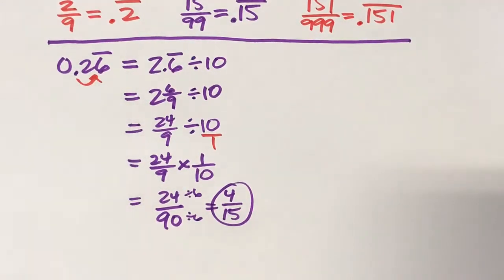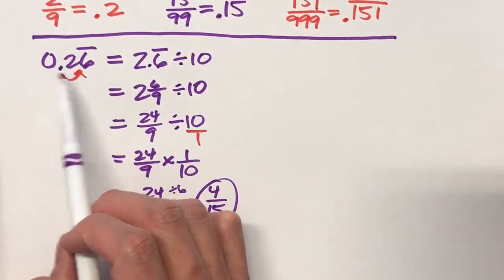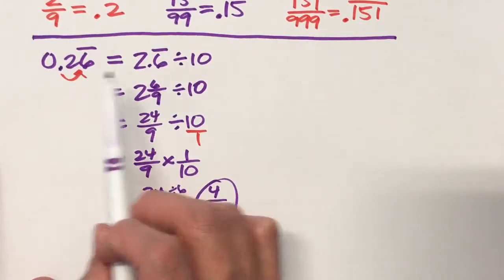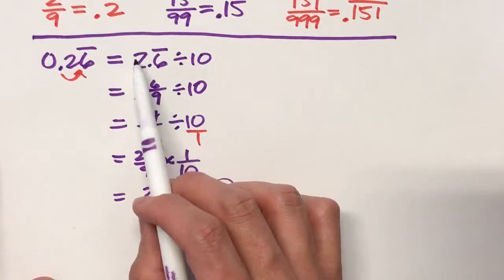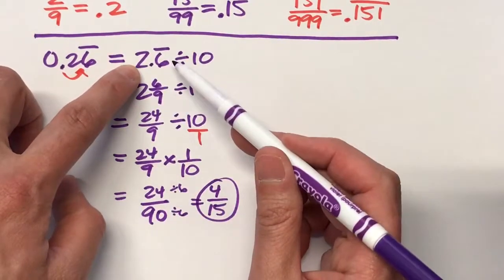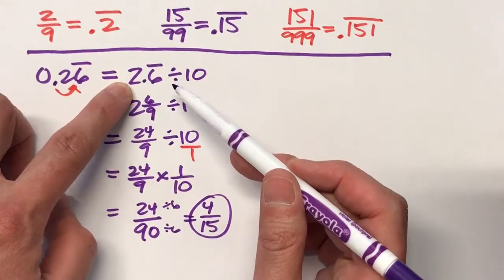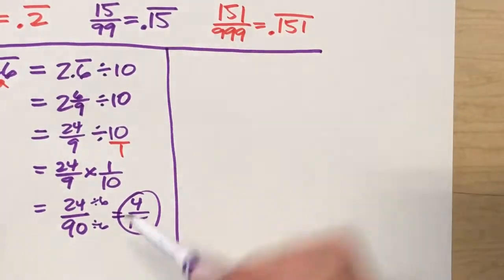So the key to this whole thing is really taking your repeating decimal and dividing it by something so that it'll turn into a repeating decimal that we can easily convert into a fraction. We'll do one more example.